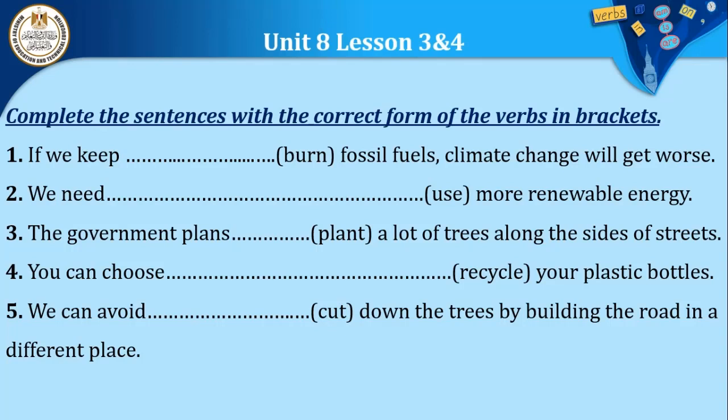Now we want to put the verb 'burn' in the correct form — after 'enjoy', do we use '-ing' or 'to' plus infinitive? Exercise examples: 'We need to use more renewable energy.' 'The government plans to plant a lot of trees along the sides of streets.' 'You can choose to recycle your plastic bottles.' 'We can avoid cutting down trees by building the road in a different place.'